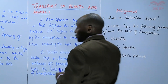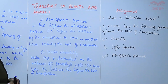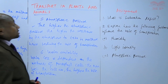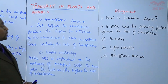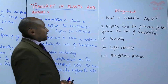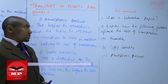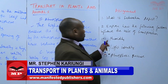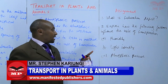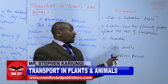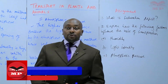The assignment for today has two questions. First, what is saturation deficit? Second, explain how the following factors influence the rate of transpiration: (a) humidity, (b) light intensity, and (c) atmospheric pressure. We stop there for today. Goodbye.